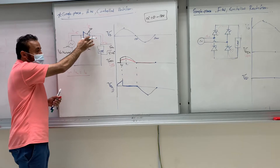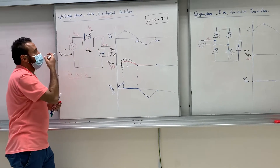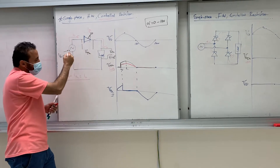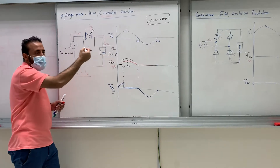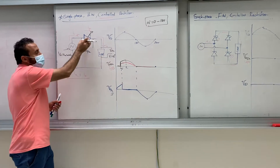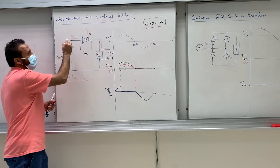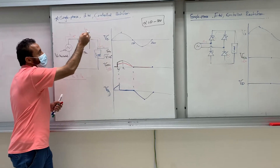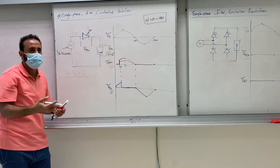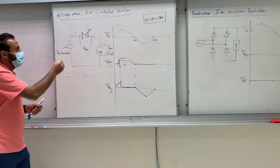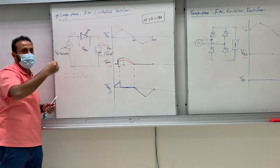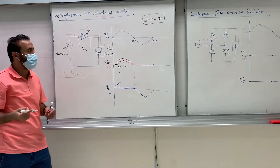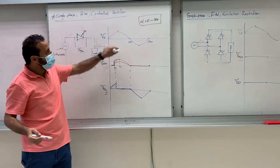If the negative tries to go through the thyristor, it cannot — it works as an open circuit. So there is no I_source, no I_thyristor, and no I_output. That's why we use the DC output here because we only have positive pulses.